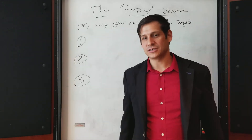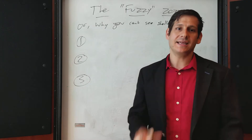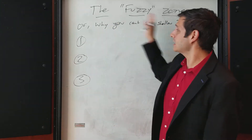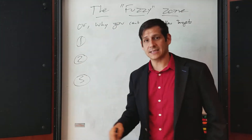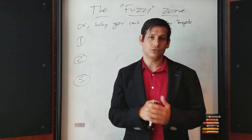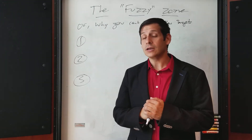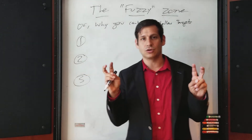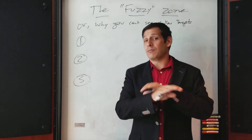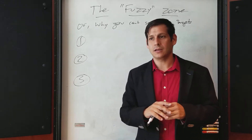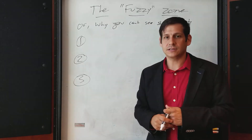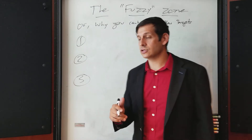Hello everybody, this is Dan Bigman. I'm a GPR professor from LearnGPR.com and today's video is about the fuzzy zone, or as some people call it, the hazy zone. What is the fuzzy zone? Really the question we should be asking is: why can't you see shallow targets with your ground penetrating radar? We're going to give you three reasons why there's this fuzzy zone, which is not a zone where it's impossible to see targets, but it's more difficult to identify them. The fuzzy zone will vary for different antenna frequencies.